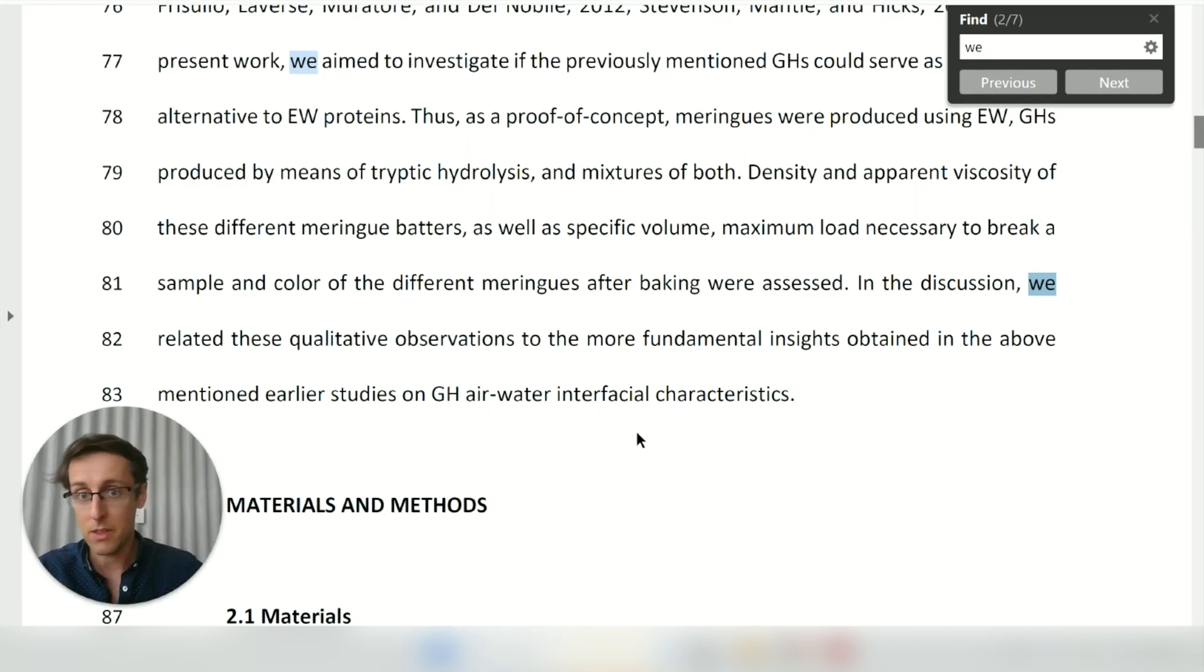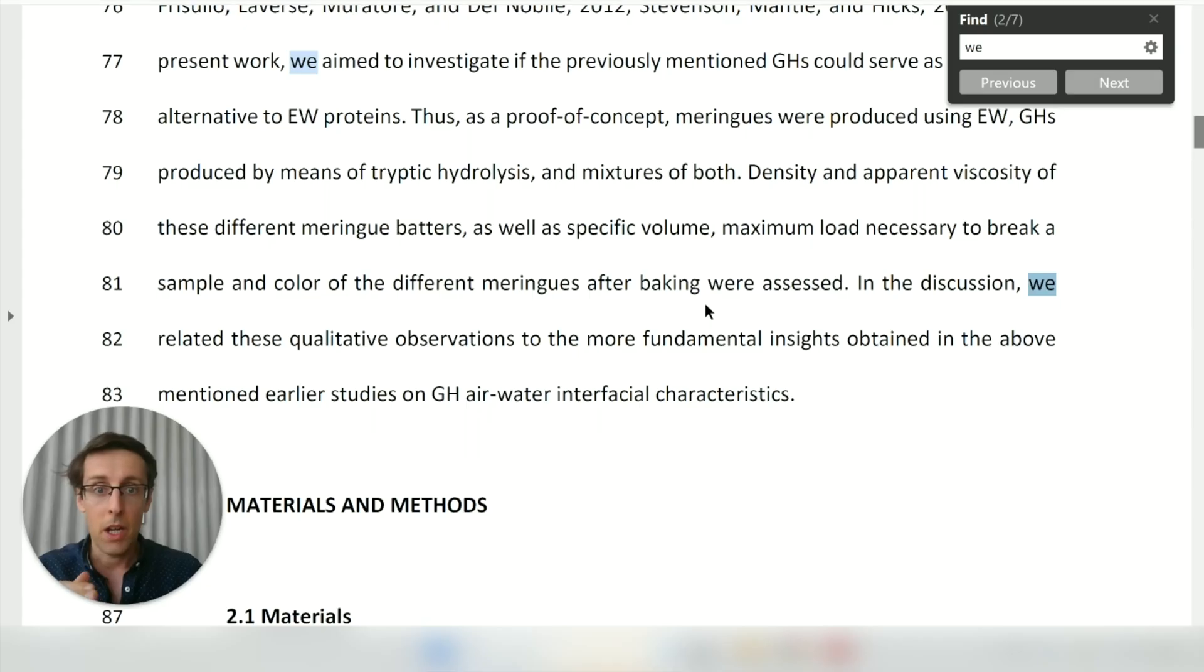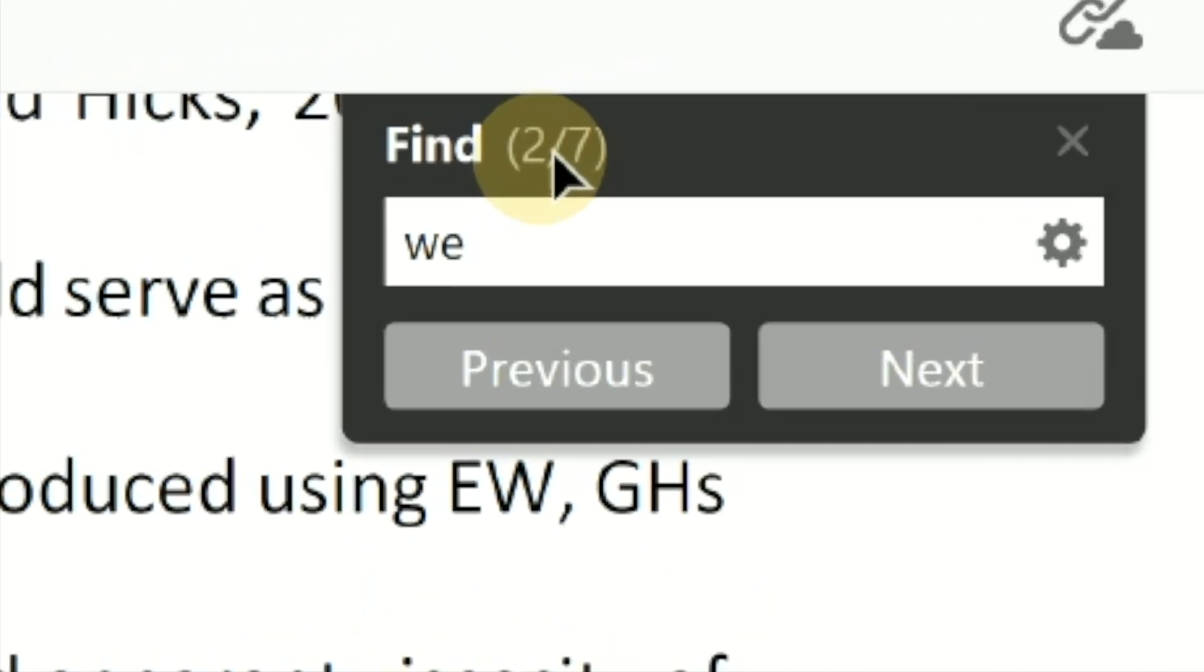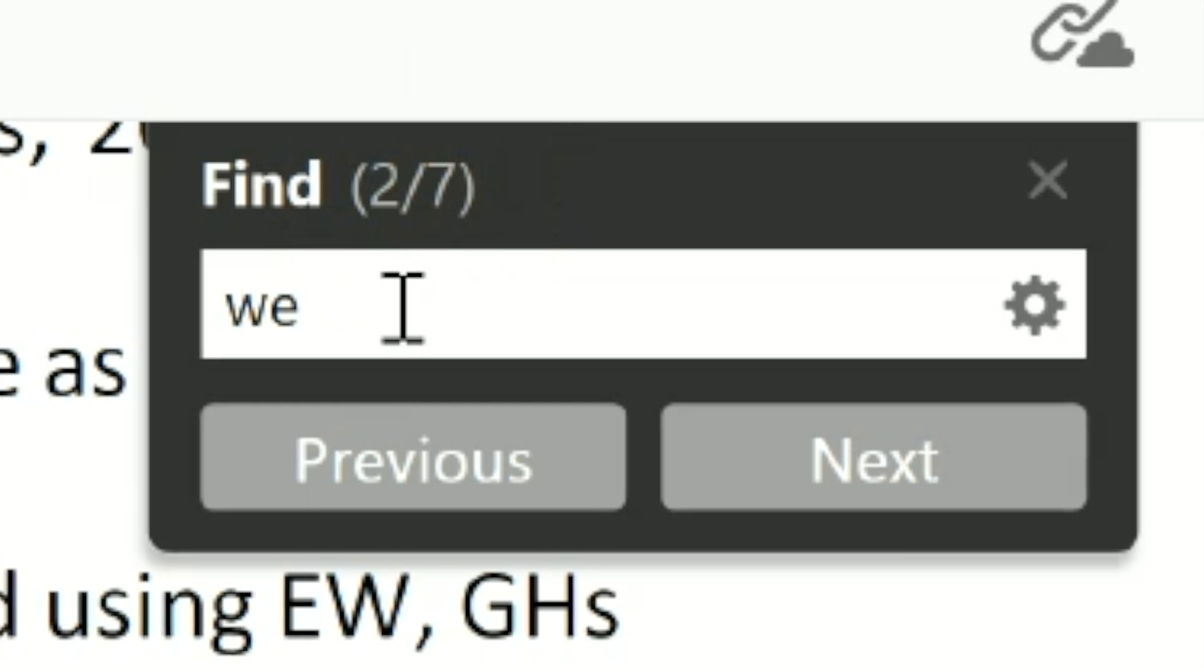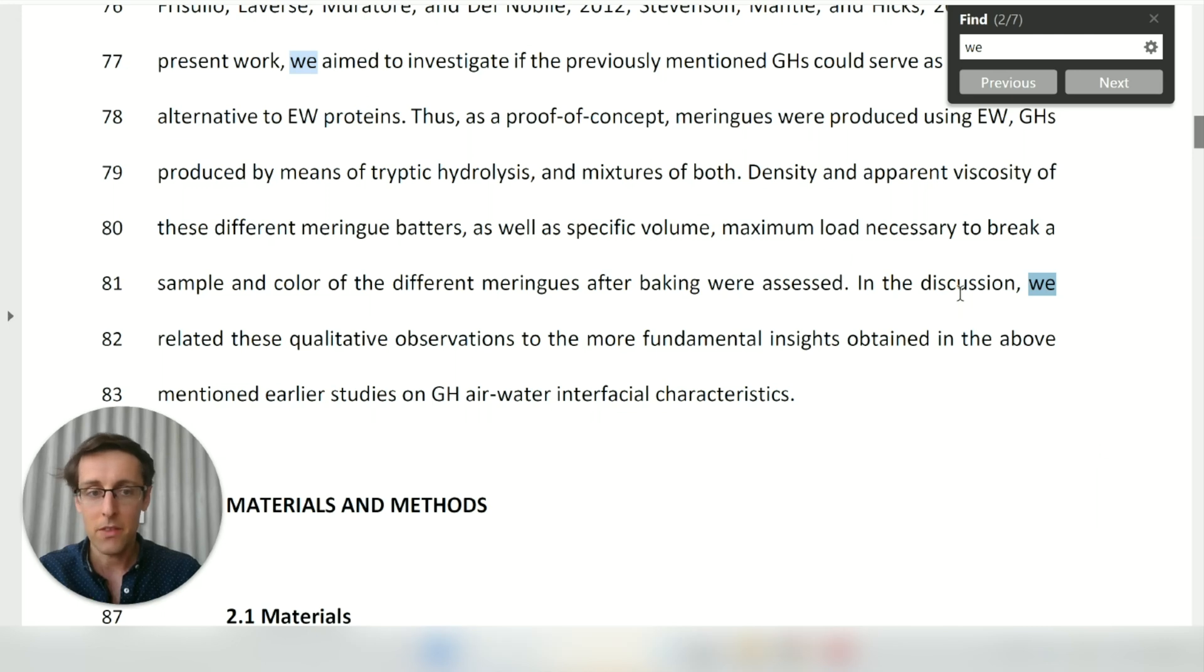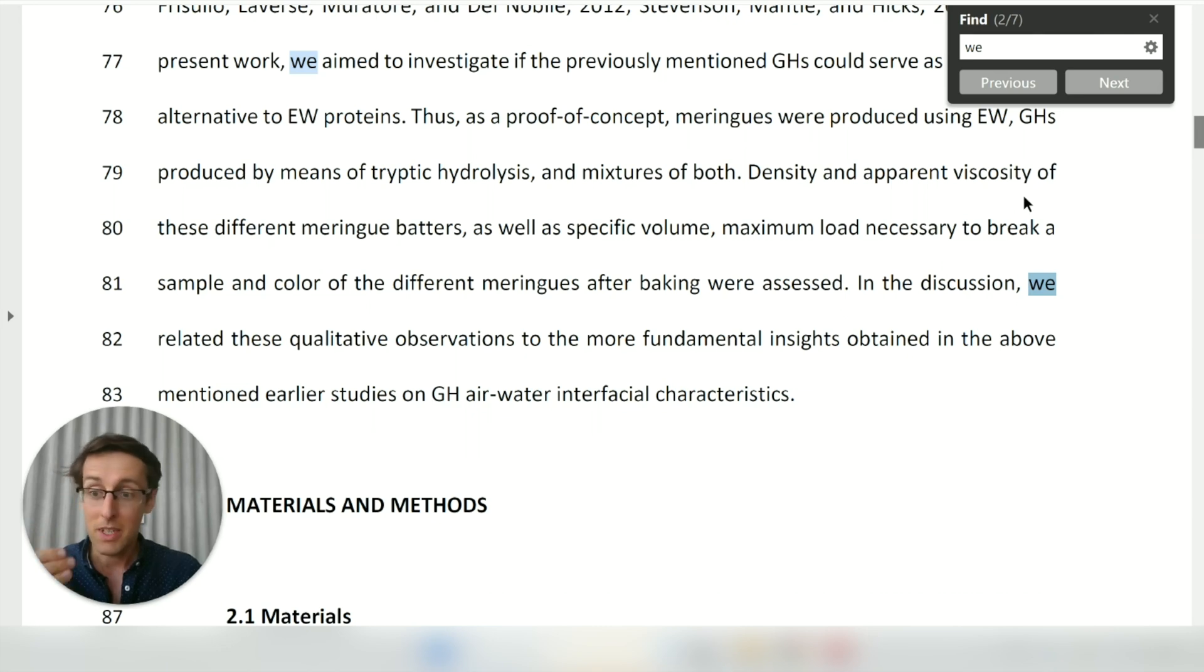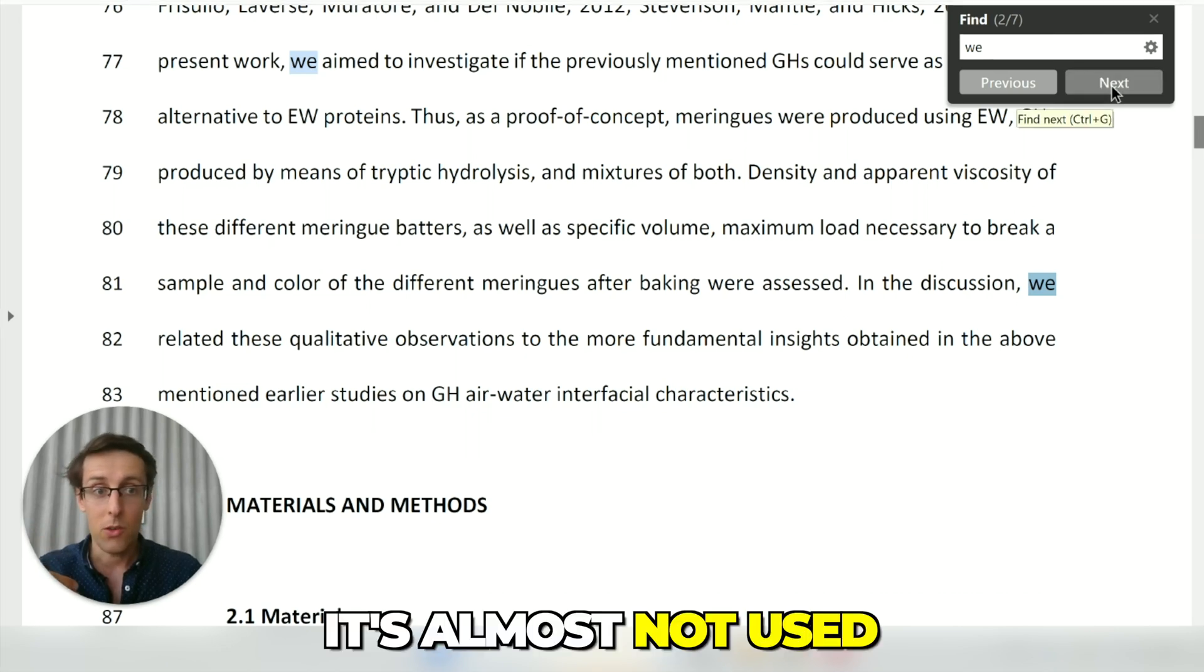Okay, let's look at this paper first. So this is a more quantitative field—it's exact sciences. They talk about proteins, hydrolysis, and all that kind of stuff. So a more quantitative field. You can see a couple of examples of we here, but there's very little really. If we search this document, there are only actually seven examples of we altogether. It's used in the aim to present what the aim is and then also to present the structure of the paper, like in the discussion we related, but in the materials and methods it's almost not used.